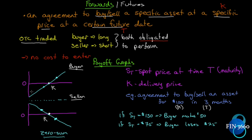That's what a payoff graph looks like — we can see the payoff at each point. Since there was no cost to enter, the payoff is a linear relationship with the spot price of the underlying asset. Once we have options, there is a cost to enter and these payoff graphs change shape. That's forwards and futures — just an introduction; we'll get into much more detail throughout the textbook.